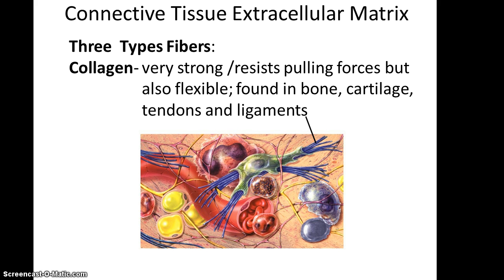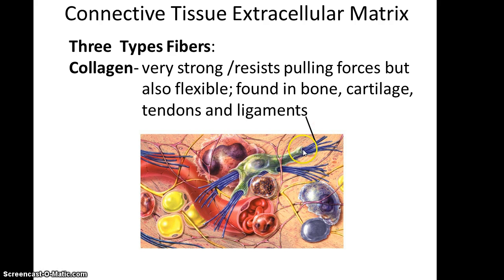The fibers come in three types. These protein fibers include collagen, which is very strong and can resist pulling forces, but is also flexible. It is found in bone, cartilage, tendons, and ligaments. In the artistic picture, you see these bundles of collagen in a sort of bluish color, going in one straight path because they do not branch.